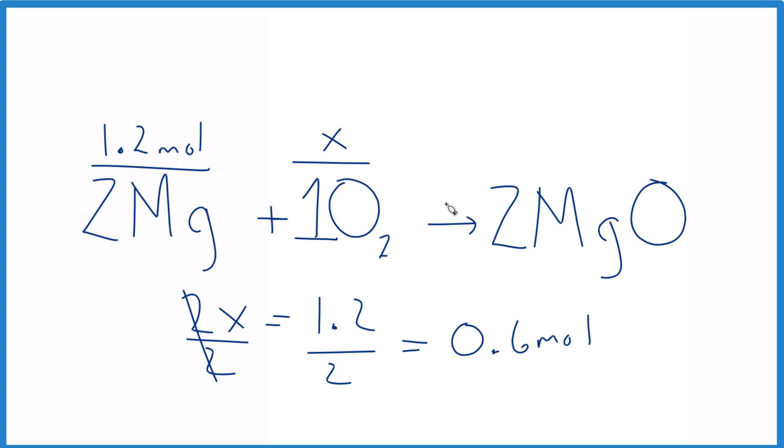So let me give you one here to try using this little ratio trick. We'll use the same equation here. If you have 7.26 moles of magnesium, a number I just made up, how many moles of oxygen do you need for the reaction to go to completion?